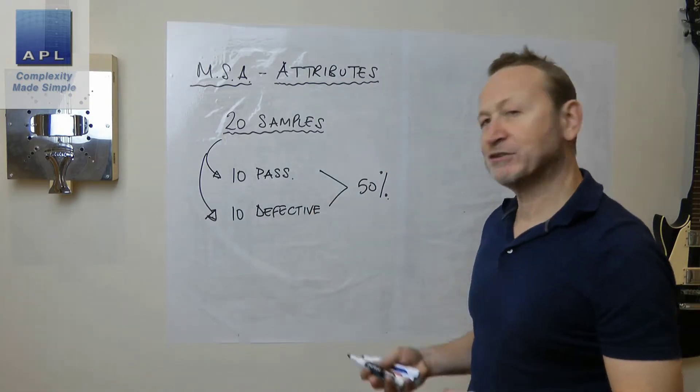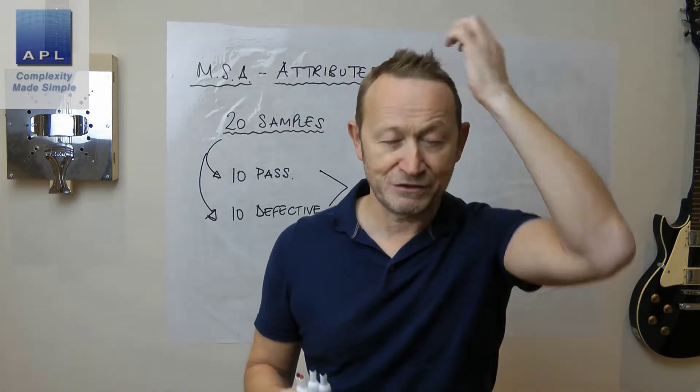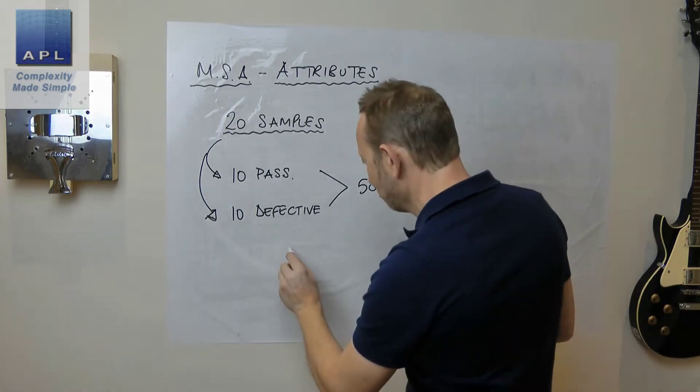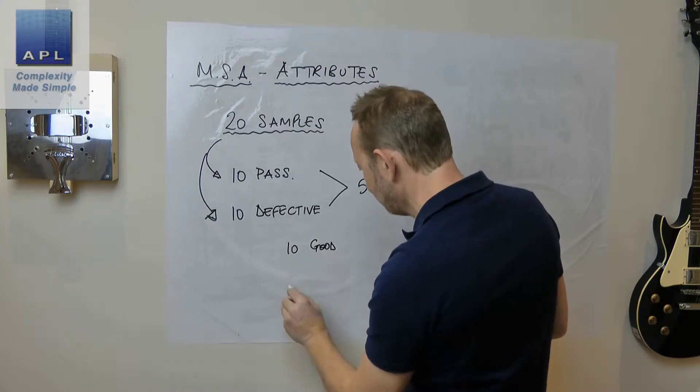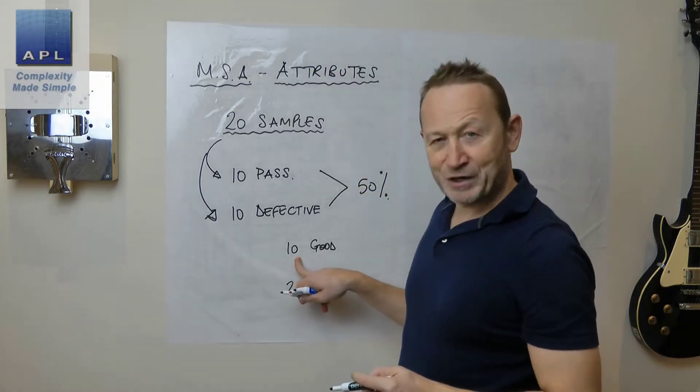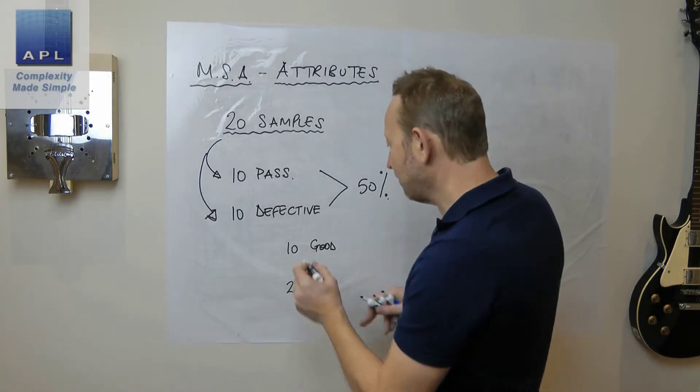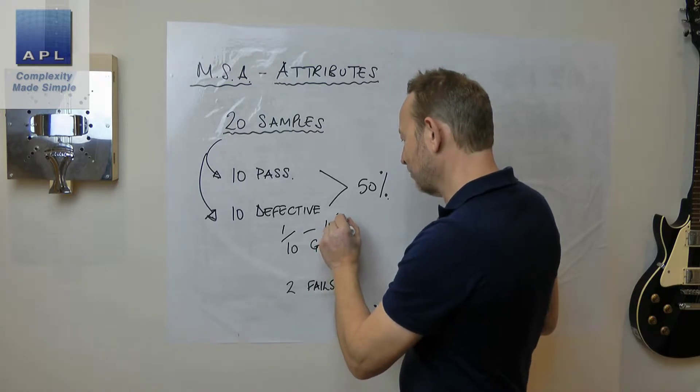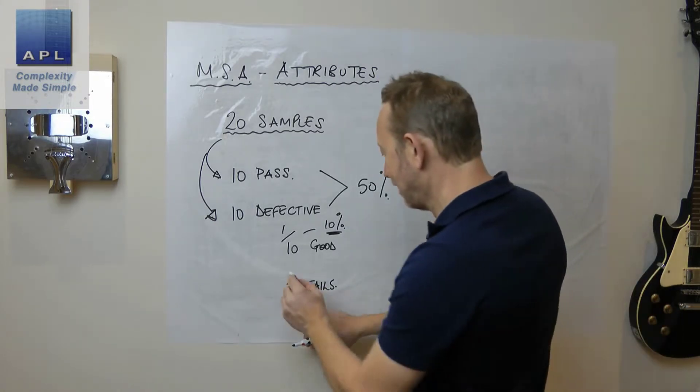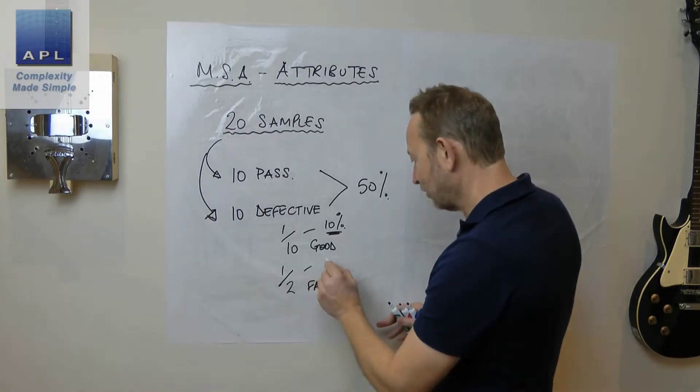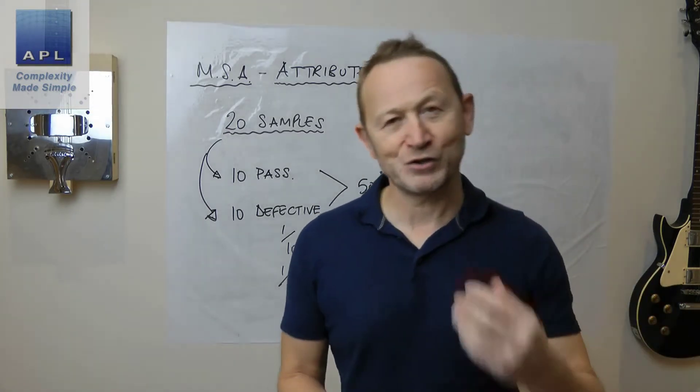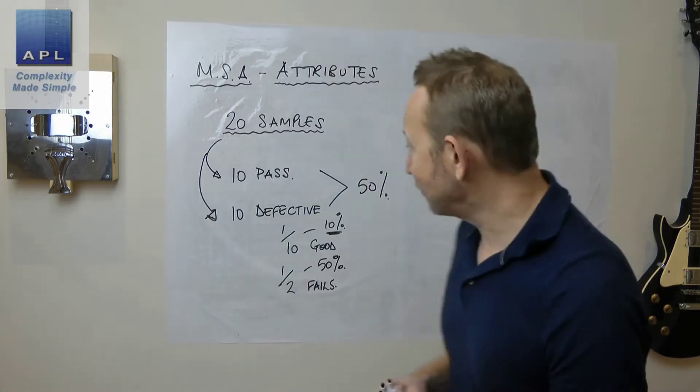And the reason for that is because all the statistics that come with this method are all worked out as percentages. So if you've decided to offer up 10 that were pass, 10 good ones, and two that were fails, if I make a mistake when I'm assessing the good ones, I make one mistake out of 10. So I'm only wrong 10% of the time. But if I make a mistake here, one in two, suddenly I'm making a mistake 50% of the time. And now what you're getting is you're getting a bias through the statistics.